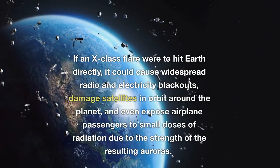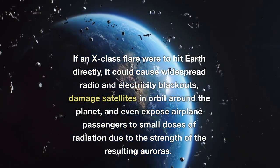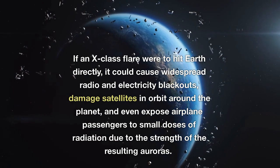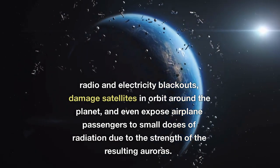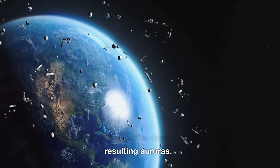If an X-Class flare were to hit Earth directly, it could cause widespread radio and electricity blackouts, damage satellites in orbit around the planet, and even expose airplane passengers to small doses of radiation due to the strength of the resulting auroras.